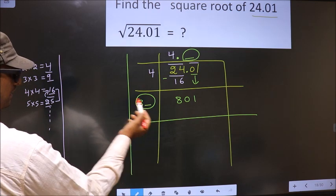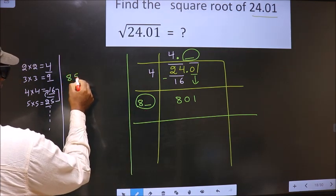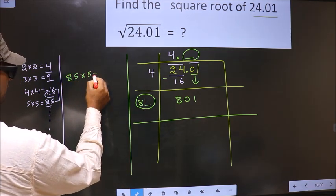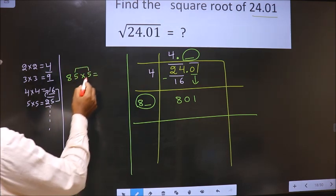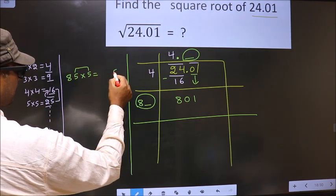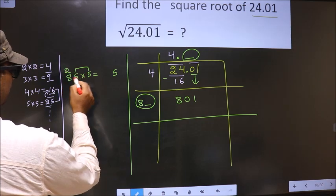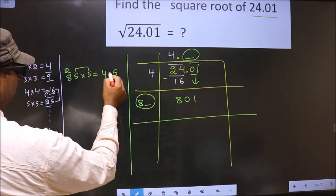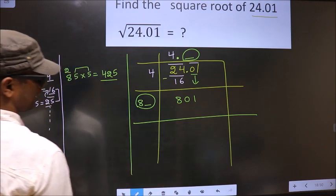If we take 5, we should also multiply by 5. These two numbers should be same. So 5 into 5, 25. So 85 times 5, 40 plus 2, 425. This is far from this.